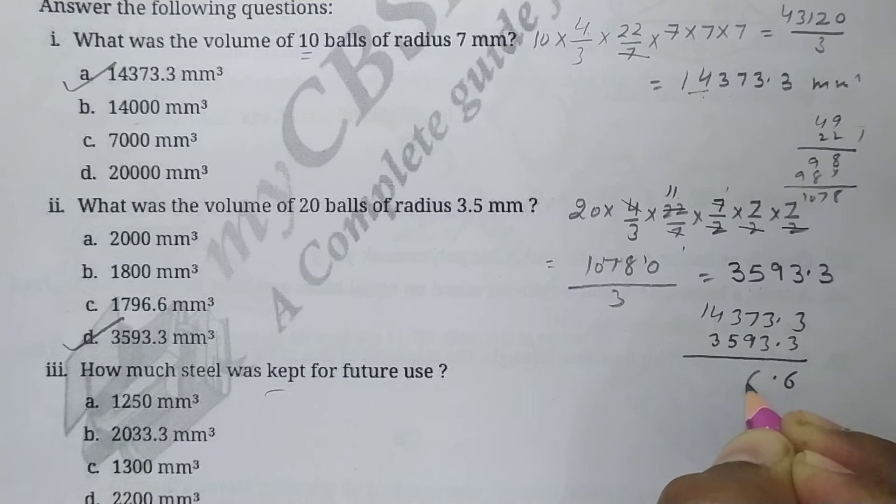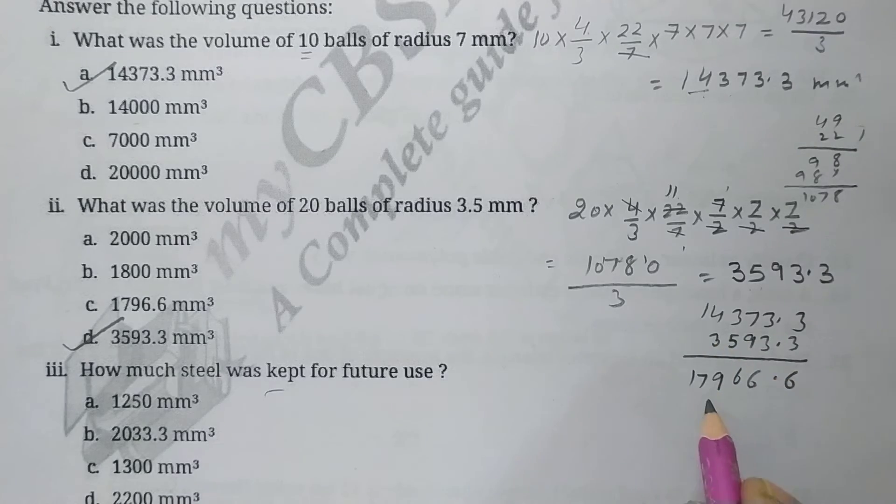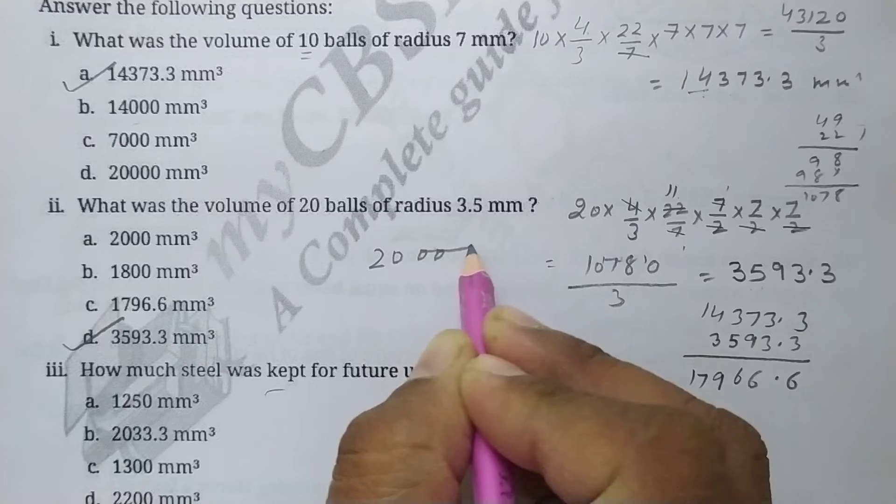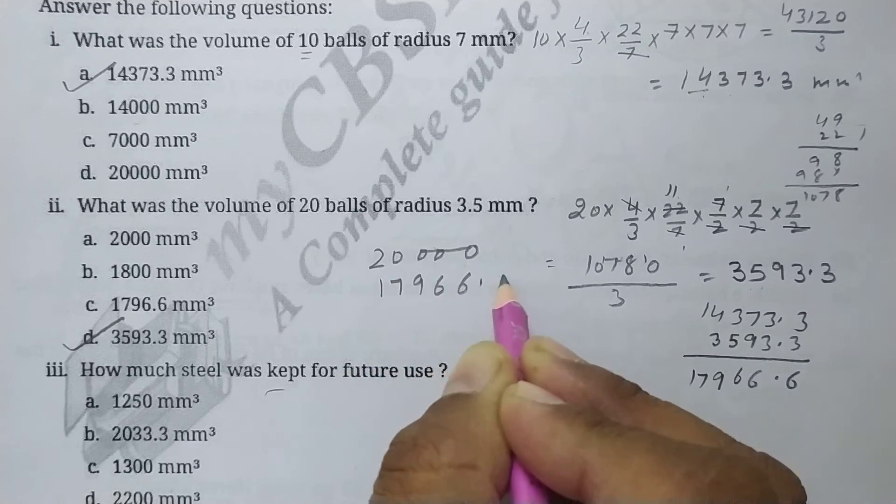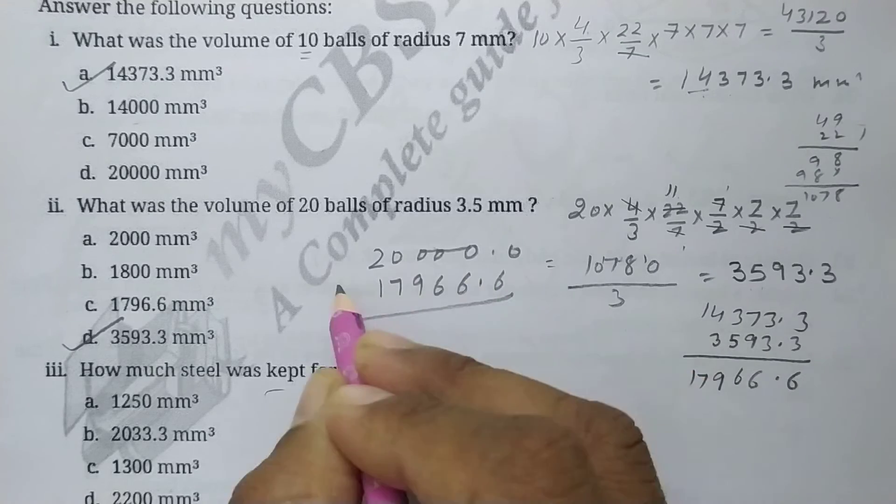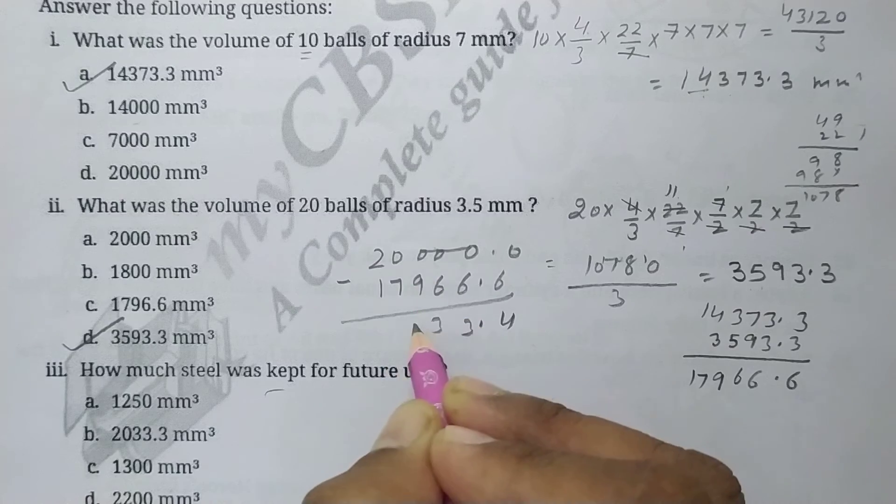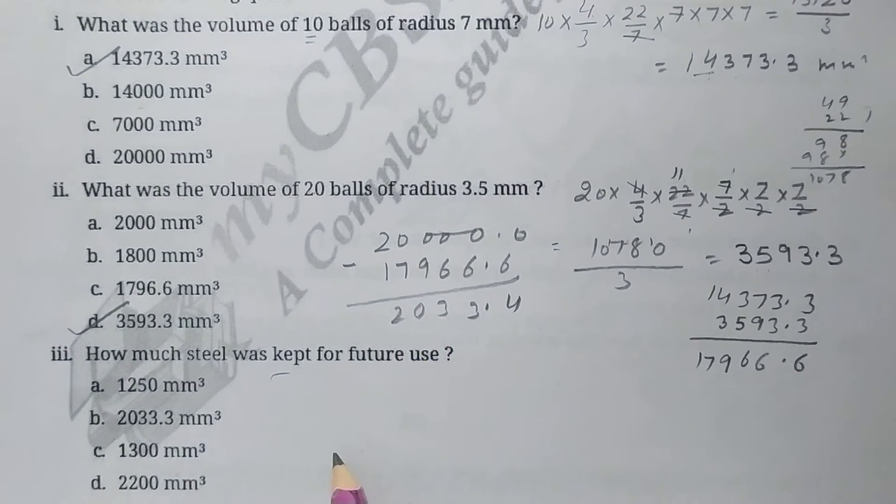So this is 3593.3, this was used. This was used. From 20,000, subtract this, which we have to keep for the future. So this is 17,966.6. So subtract: 3, 3, 0, 2.